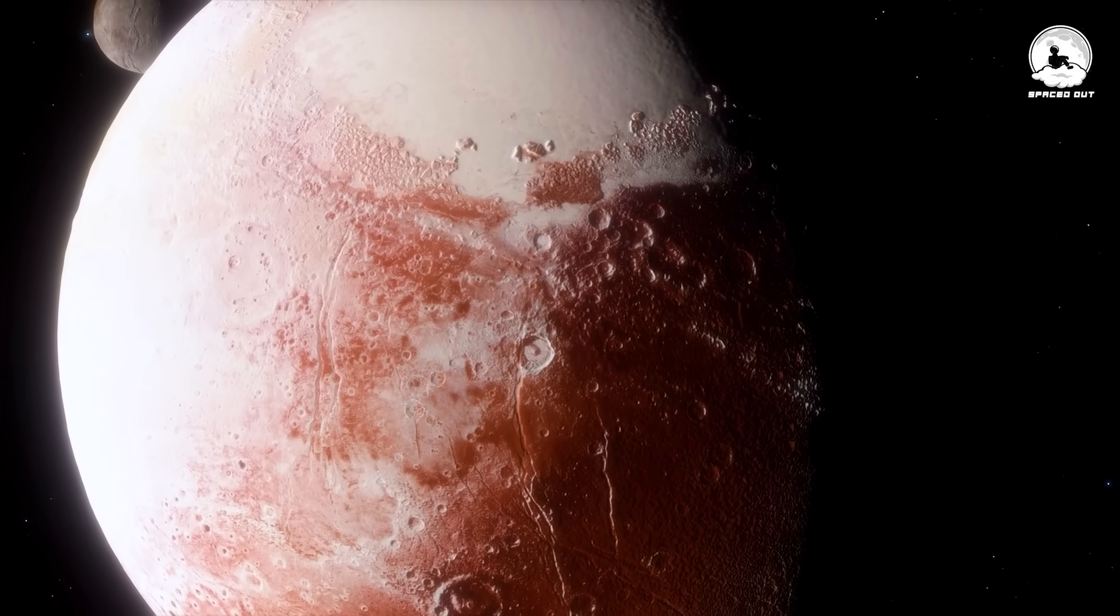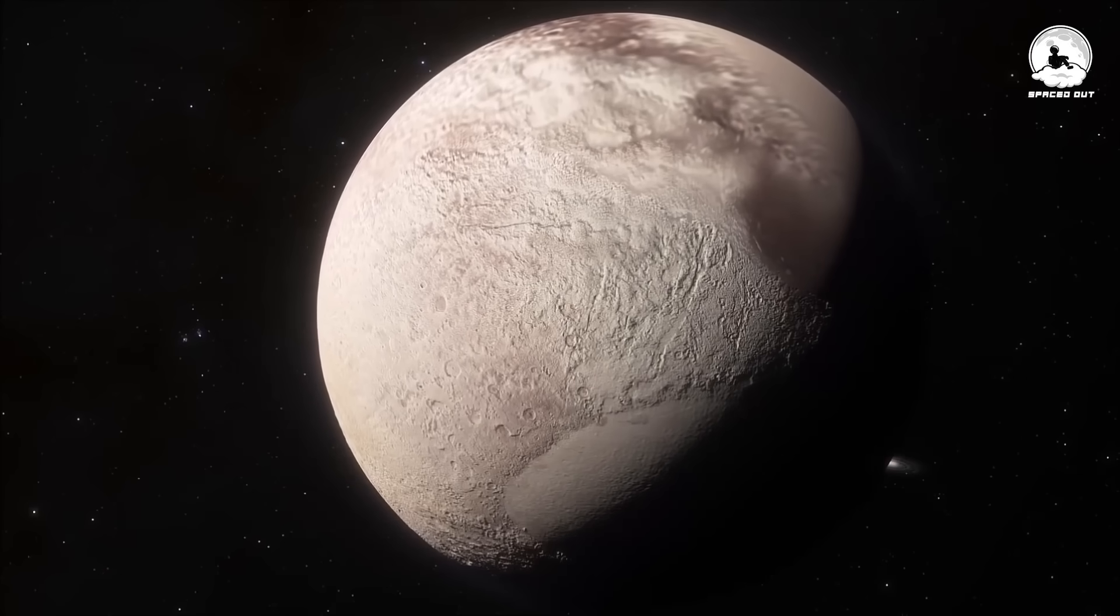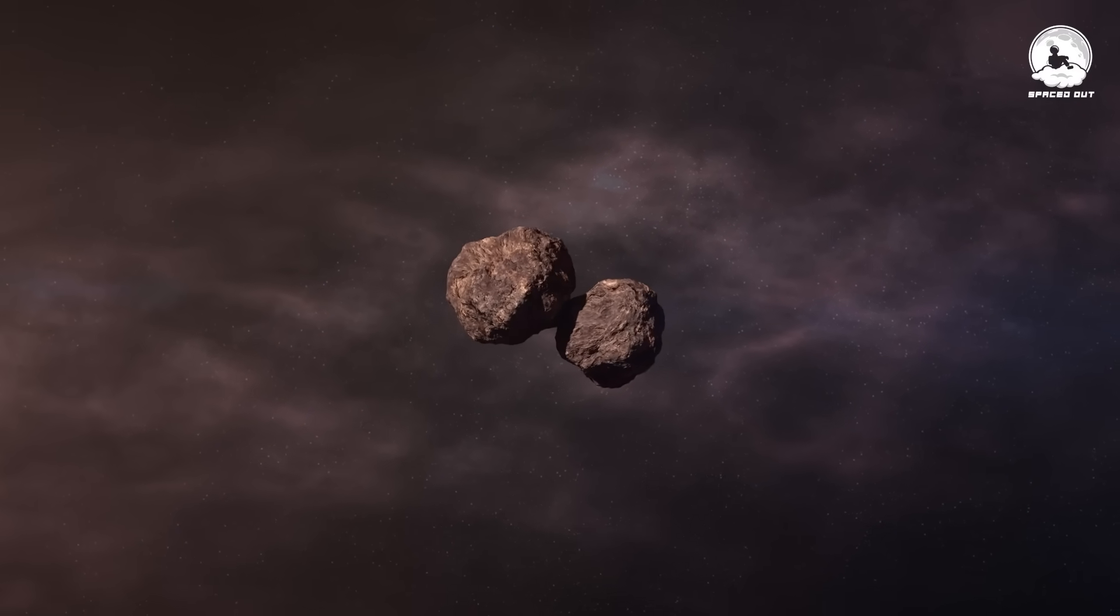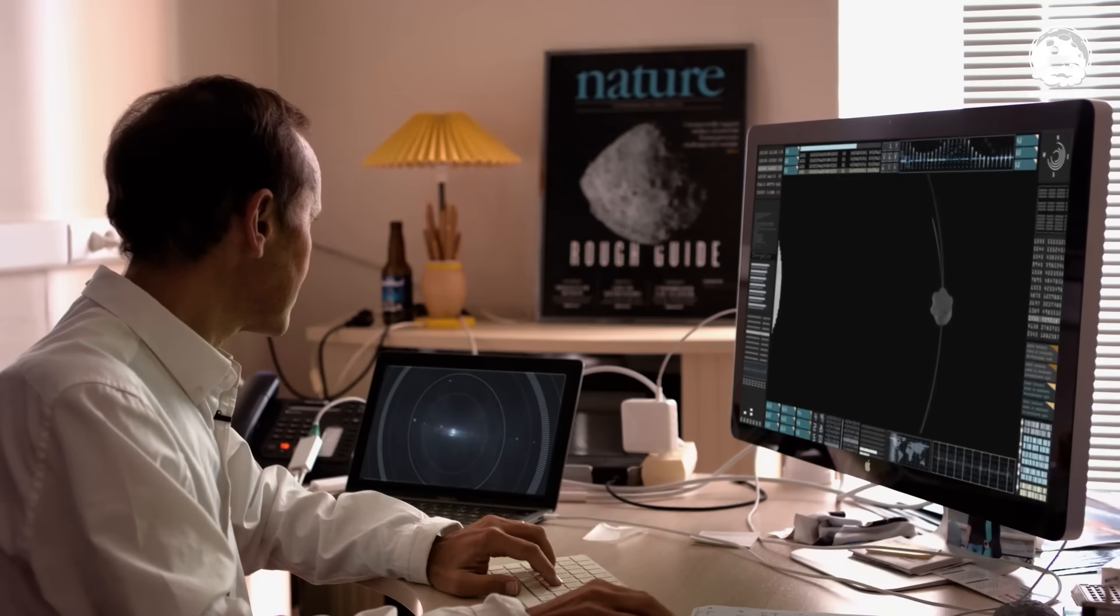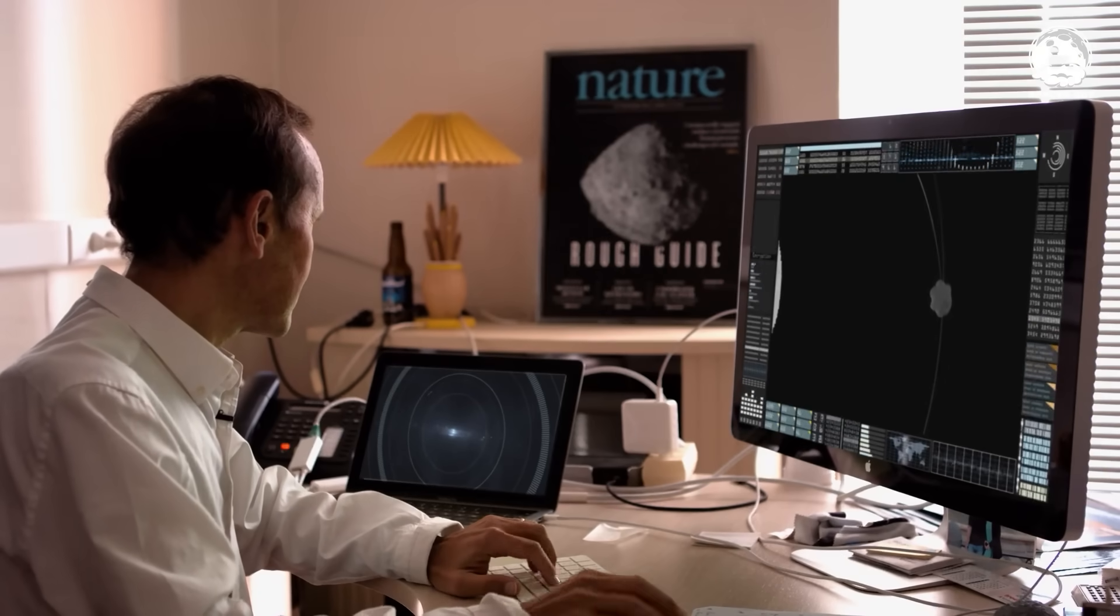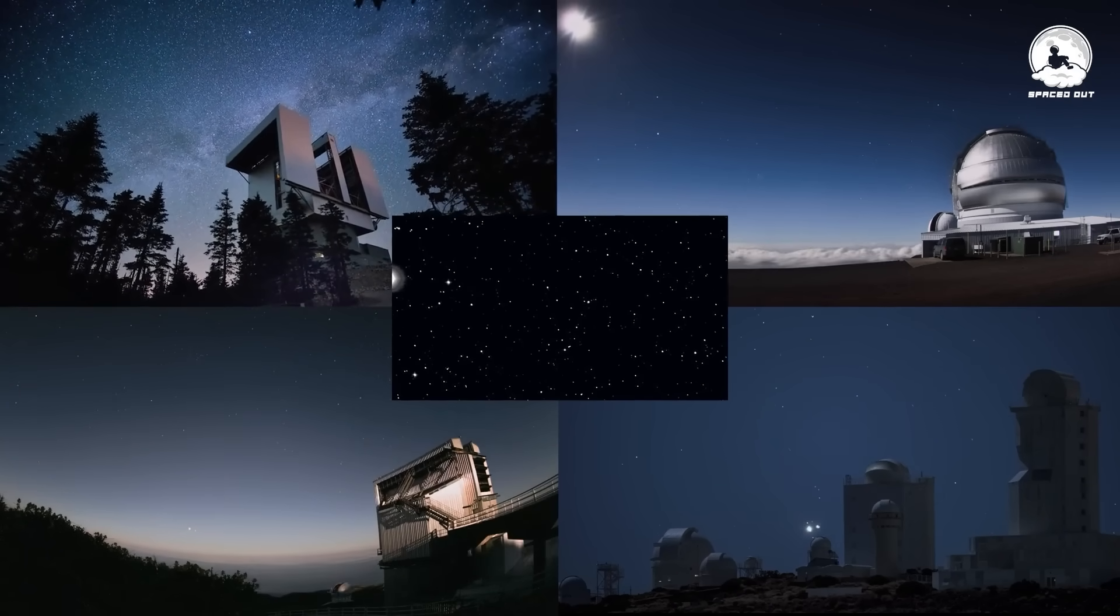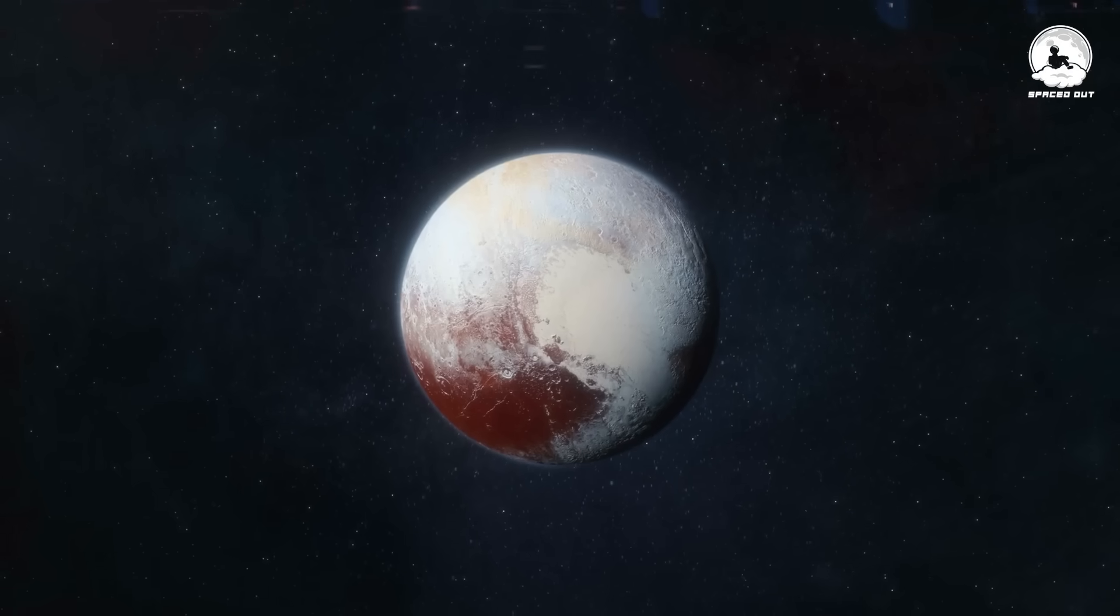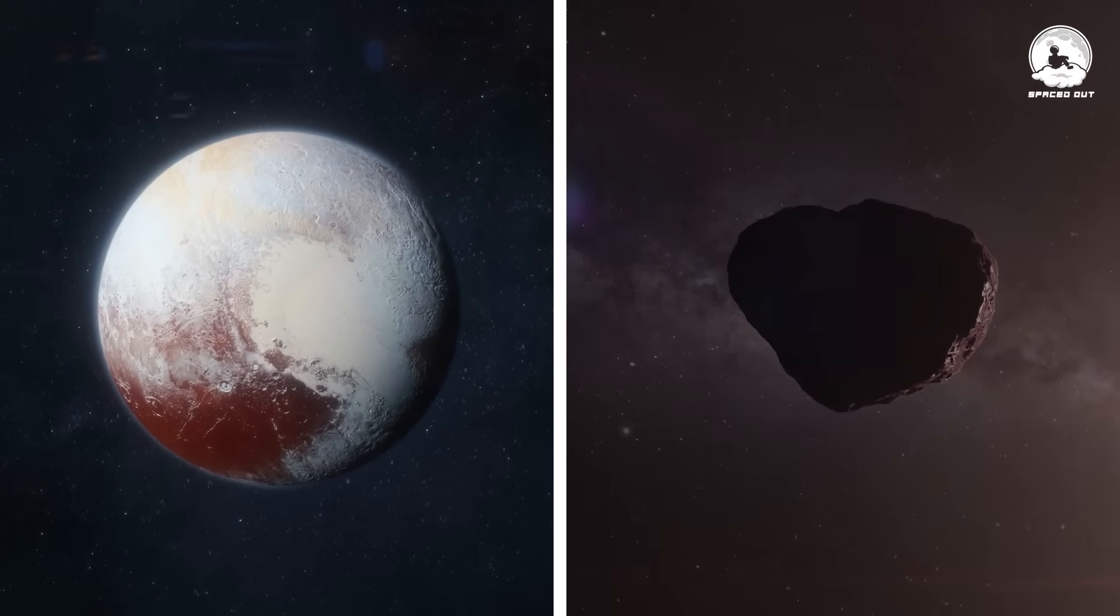Pluto is very round, made of water ice mountains and nitrogen ice glaciers, and has five moons. Arrokoth is only 18 miles across, very red and shaped like a snowman. All other KBOs have only been studied using telescopes, and even the best telescopes on Earth and in orbit still see them as dots. So we don't know as much about their shapes and colors as Pluto and Arrokoth.